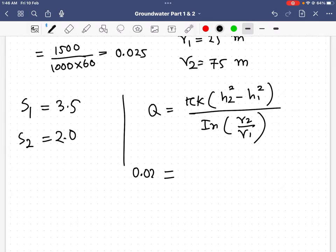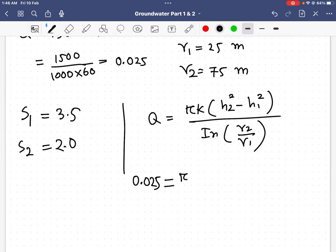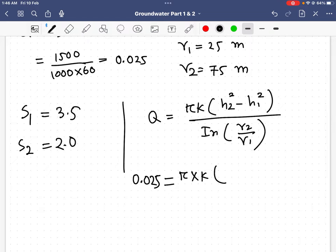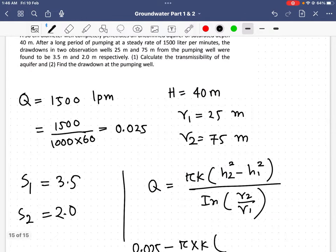I have my Q already, 0.025, then pi. I don't know the value for K, so I will find out this K by using this formula.